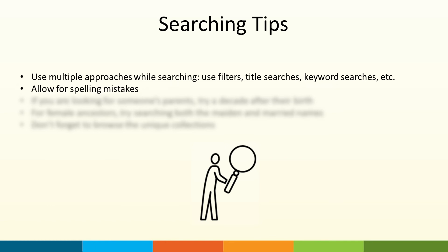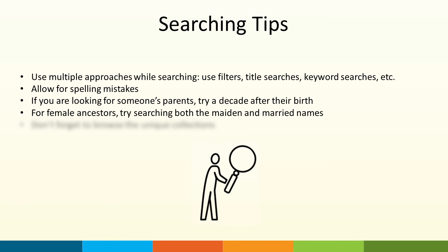Some more searching tips: allow for spelling mistakes, as people's names are sometimes spelled incorrectly on census records and the handwriting can be difficult to decipher. If you're looking for someone's parents, try searching a decade or so after their birth. For female ancestors, make sure you're looking for both the maiden and married names. And don't forget to browse unique collections such as maps, catalogs, postcards, and newsreels to get a glimpse of the bigger picture.